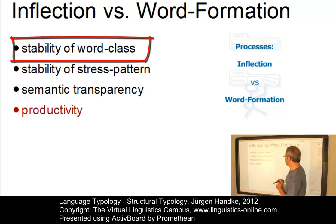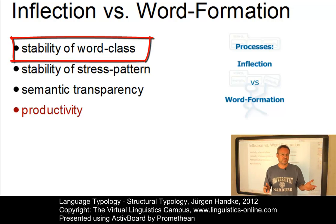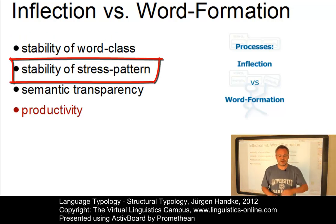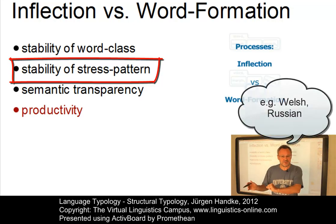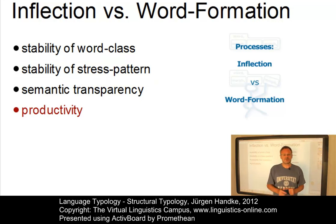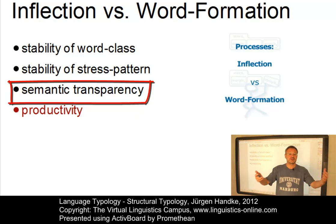The stability of word class is one criterion. Inflectional processes do not change the word class of the stem, irrespective of the type of morphological operation involved — prefixing, suffixing, and so on. A second criterion concerns the stability of stress pattern. Inflection, at least in present-day English, does not involve a change of the stress pattern of the stem. The third criterion is referred to as semantic transparency — inflection is semantically transparent, meaning the meaning created by a morphological operation is stable.